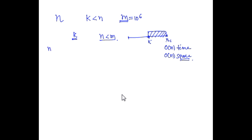Consider a case where n is 10^9. You have 1 crore numbers given to you. Think of it as working for a bank where this could be transactions happening over a period of time — you get a stream of data. This is the amount of transactions that people are doing, and at any point of time you want to keep track of the thousand biggest transactions in terms of value.